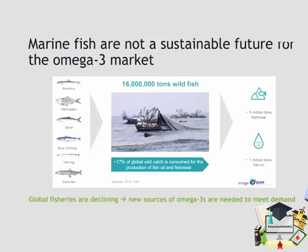However, given that the vast majority of the market share for omega-3 PUFAs is derived from wild marine fish species, it is clear that the future of the omega-3 market is not sustainable in terms of fish. Every year approximately 16 million tons of wild fish — predominantly forage fish species such as anchovy, menhaden, and sardine — are harvested specifically for the purpose of converting those fish products into fish oil or fish meal, to feed animals or to put into fish capsules for the human market. However, global fisheries are declining at an alarming rate around the global ocean, and new sources of omega-3s are sorely needed to meet growing demand.